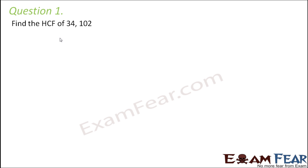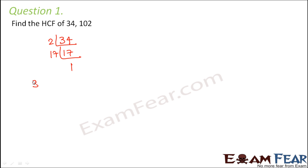Find the HCF of 34 and 102. We will find it out by prime factorization method. 17 is a prime number, so 34 can be written as 2 into 17.